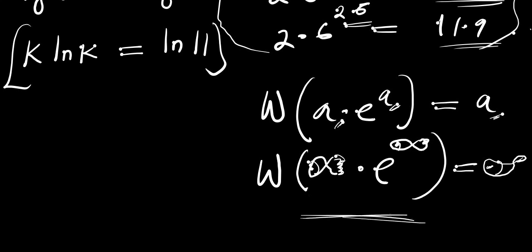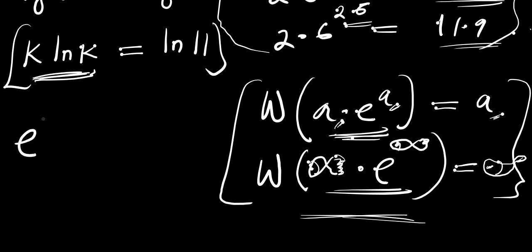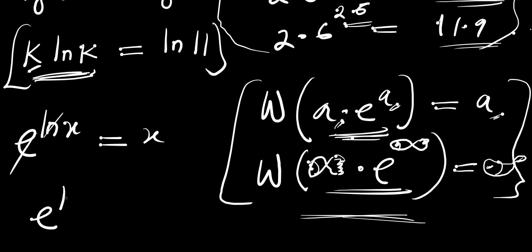This is how the Lambert W function is used, but you need to make sure that what you have is in the form a times e to the power of a before you can apply it. We need to manipulate our expression into this form. Notice that e raised to the power of ln of x gives you x because e eliminates ln. So we can replace k with e raised to the power of ln of k.